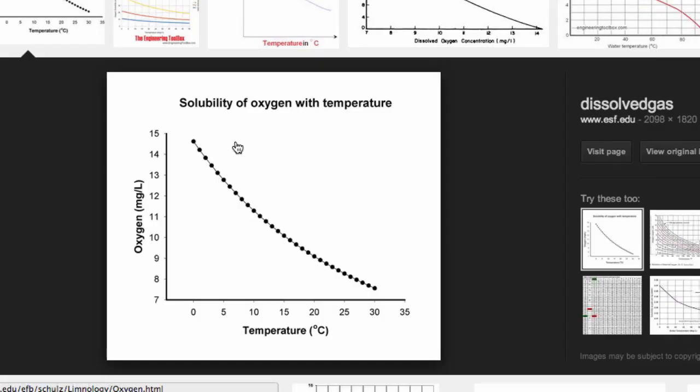Now there's a solubility curve that you can kind of see here. At zero degrees you have almost 15 milligrams per liter of oxygen. Just increasing your temperature 30 degrees about halves that.